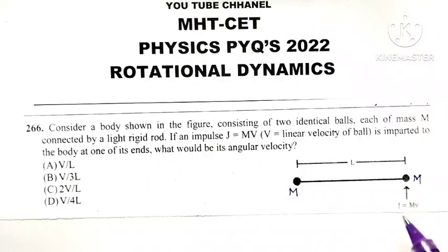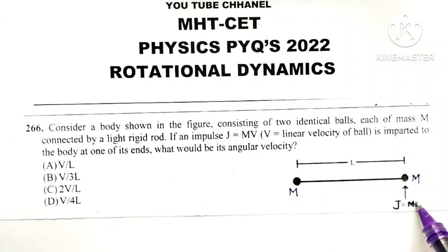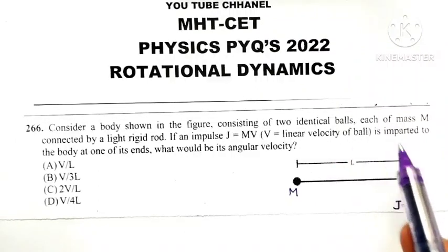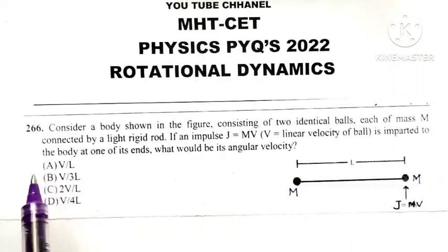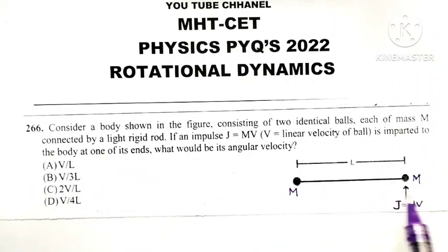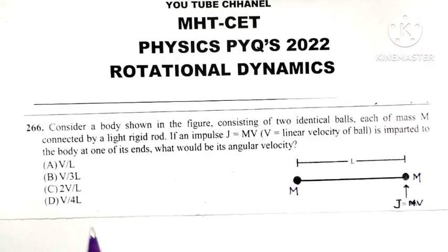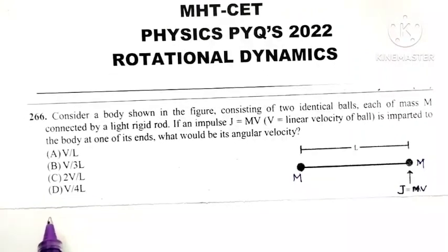Now if an impulse J equal to MV is imparted to the body at one of its ends, what would be its angular velocity omega? We want to find out.